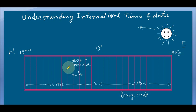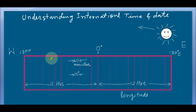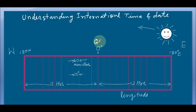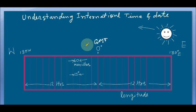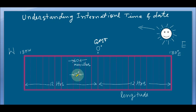Let us start. First of all, this is the longitude line, and I have opened the Earth by cutting it at the 180-degree longitude, so it will be very clear for you to understand. This one is the zero-degree longitude — you can say it is at GMT. I am adjusting the pen size a little. So this is the 180-degree west and this is the 180-degree east.